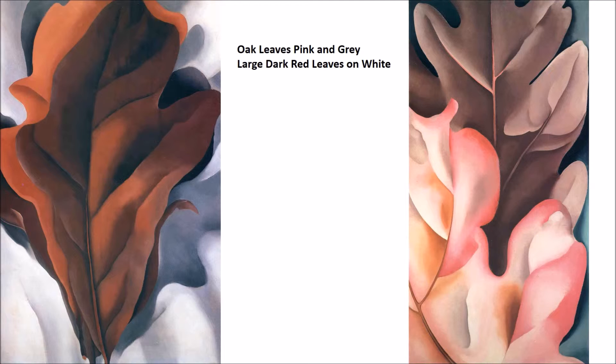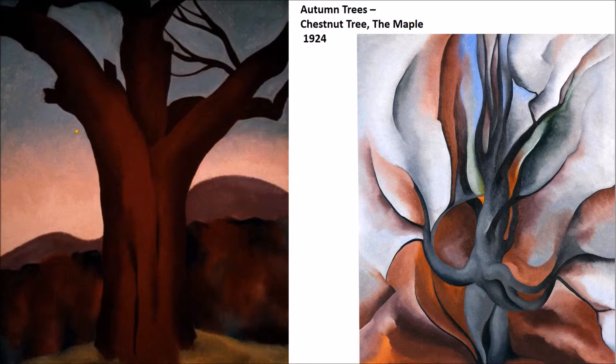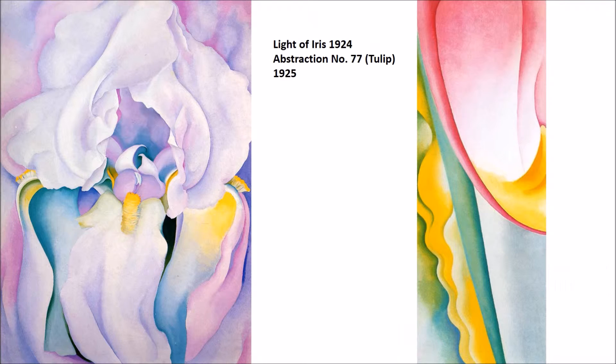And where there are leaves, there are of course trees. An interesting comparison between Autumn Trees and Chestnut Tree, the Maple: on the right, almost moving to a cubist sense, and on the left really moving towards a more precisionist sense — making the form be what's there and having solid form within the canvas, where each individual object is very firm.